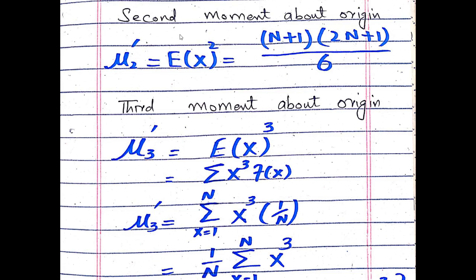The proof of the second moment about the origin is present in the variance of the distribution, because the formula for variance is E(X²) minus [E(X)]². You can find the proof of E(X²) and the link to that video at the end screen.